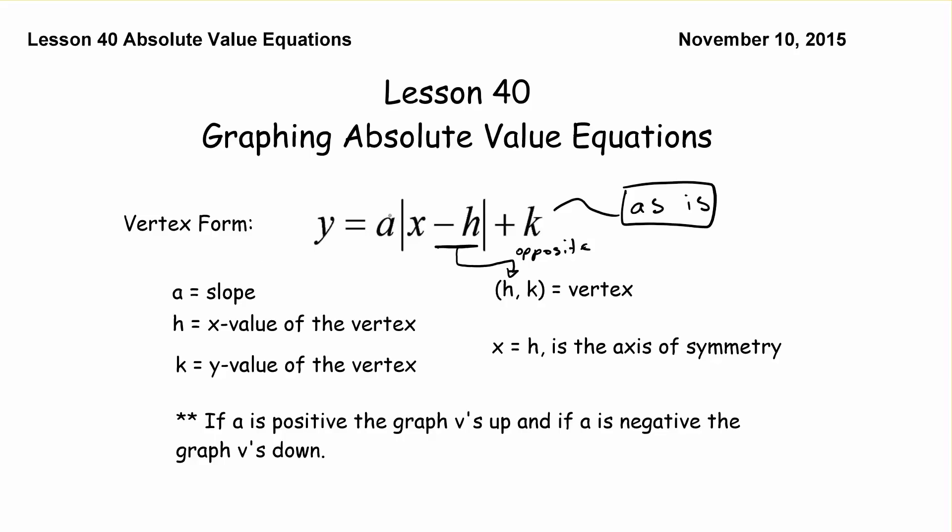We've got a slope which is our a value, the number out in front of our absolute value symbol. h and k are the vertex. And x equals h is the axis of symmetry and so that's just a vertical line that goes through the vertex.